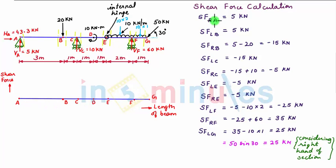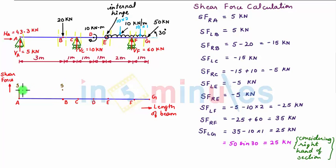Shear force towards the right of A is 5 kN. So by taking proper scale, let us plot 5 kN shear force at point A. Next, shear force towards the left of B is 5 kN. So at point B, let us plot 5 kN shear force and let us connect these two points by a horizontal line, which means that shear force remains constant between point A and B.